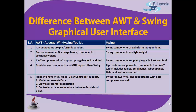AWT components don't support pluggable look and feel (PLAF), whereas Swing components do support pluggable look and feel. AWT provides fewer components and less GUI support than Swing, whereas Swing provides more powerful components including tables, scroll panes, tab panes, lists, and color choosers. Swing also follows the MVC — Model View Controller — pattern, where model represents data, view represents presentation, and controller acts as an interface between them. AWT does not support MVC.